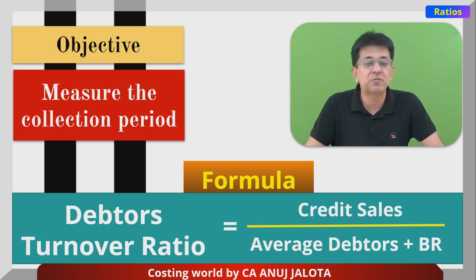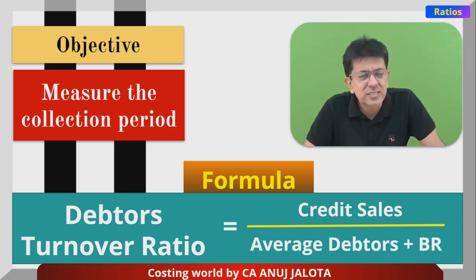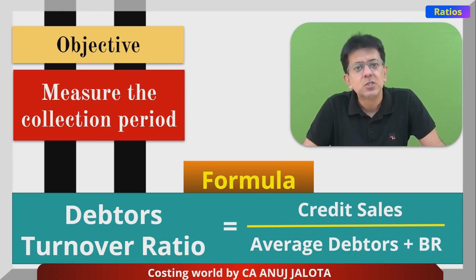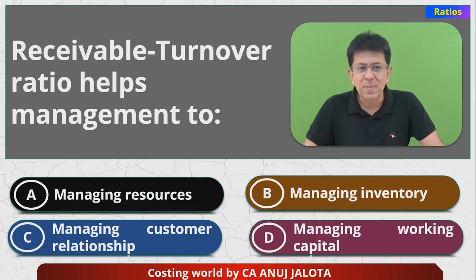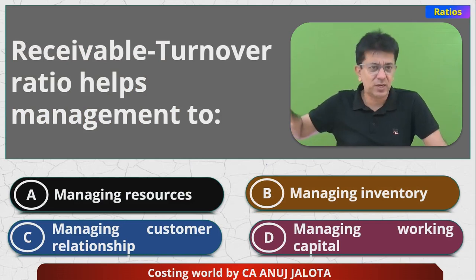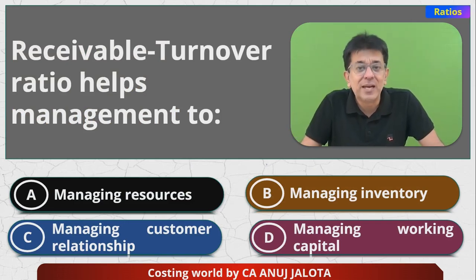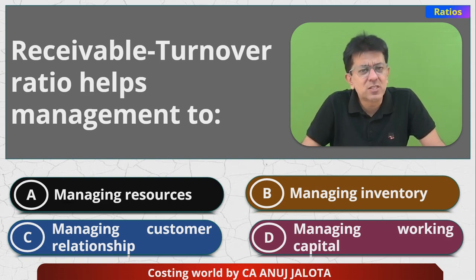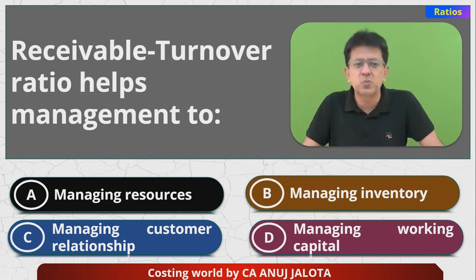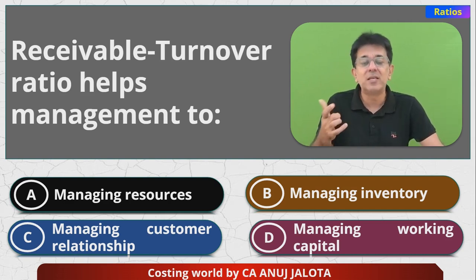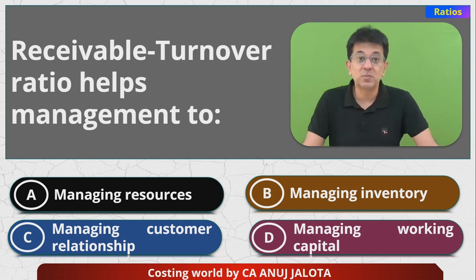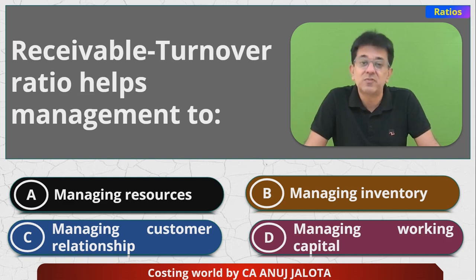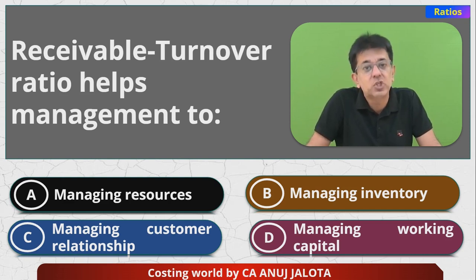This ratio will help you to manage your debtors. Debtors is part of working capital, beta. Out of the four options — managing resources is a very crude thing; resources could be of any type, so I will not go for A. Managing inventory could have been the answer if the question was about inventory turnover ratio, so that's not it. Managing customer relationships — in a small way this ratio will help you manage relationships; if from some customer you are not getting money and the ratio is very bad, you can speak with them about delays in collection.